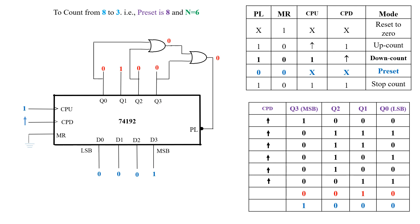In spite of getting these values during the regular count operation, we are not able to observe them because the combinational logic and asynchronous preset act so fast. Therefore, immediately the values present on D0 to D3 are fed to Q0 to Q3 — that is 1000 has got loaded. The output of the NOR gate now becomes 1, so regular down count operation will continue, and this is going to happen in a cyclic manner.